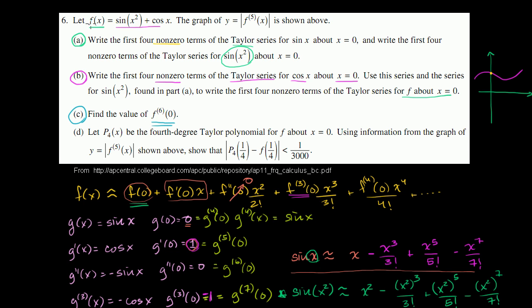If you just tried to find the sixth derivative of f, that would take you forever. And then to evaluate it at 0, because it's x squared here, you'd have to keep doing the product rule over and over again, the chain rule, and all the rest. It would become very, very messy.